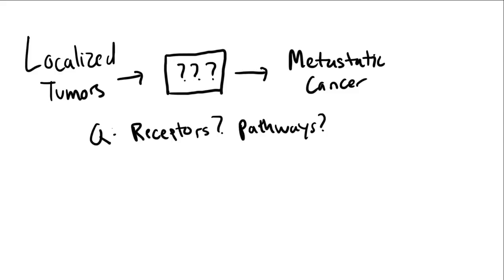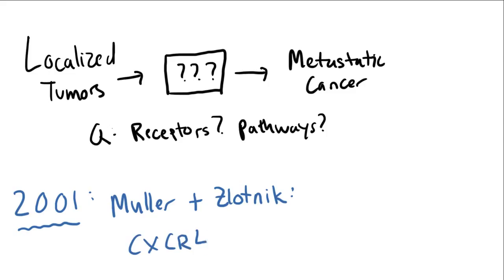But in a highly cited paper published in Nature in 2001, two scientists, named Mueller and Zlotnick, discovered the G-protein-coupled receptor CXCR4 and the chemokine ligand CXCL12 to be associated with breast cancer metastasis.